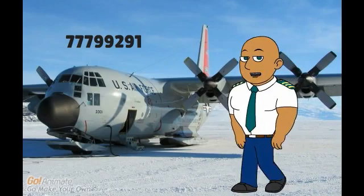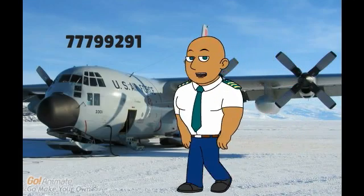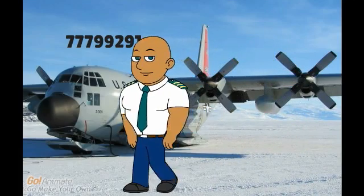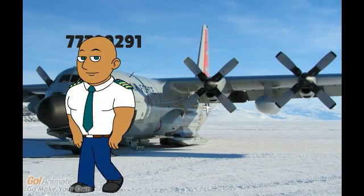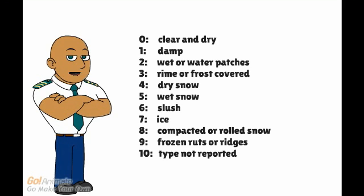The third number — also a 7 in the example — indicates the type of deposit. Take a look at this overview. In the example, the type of deposit is ice, as indicated by the number 7.